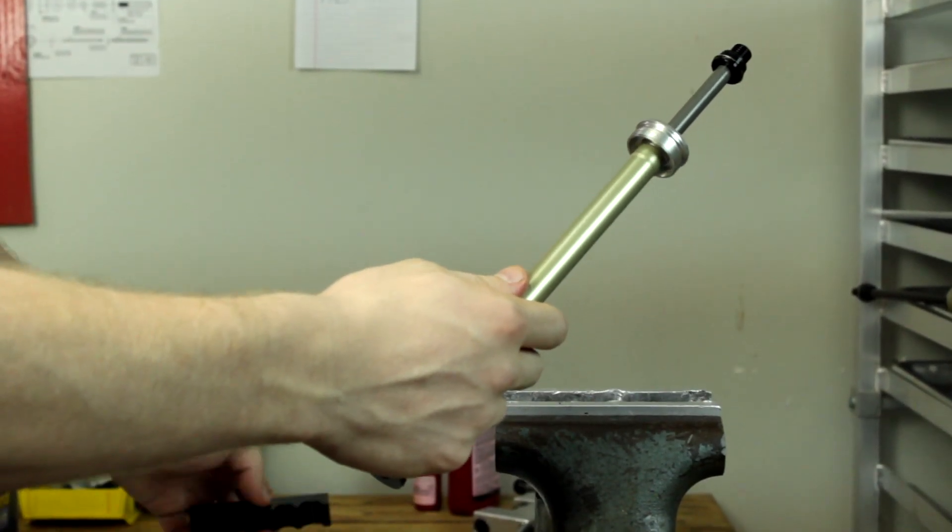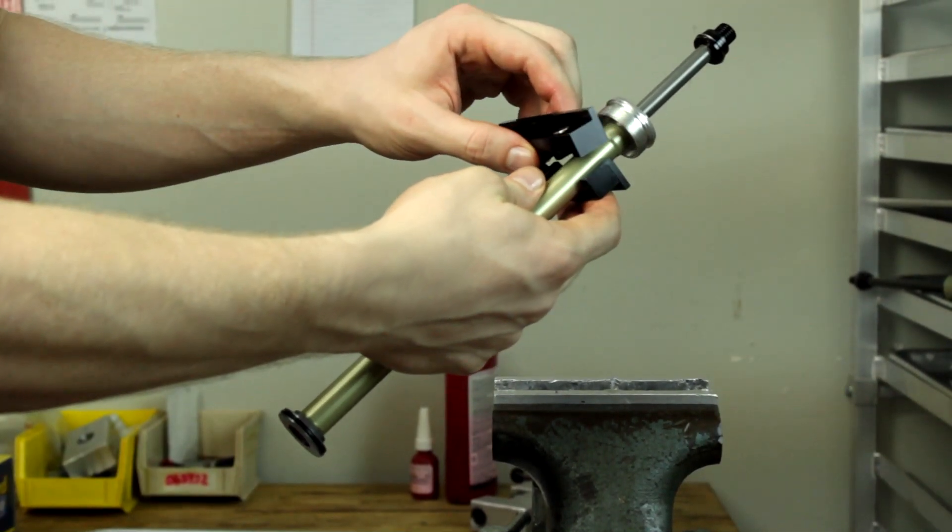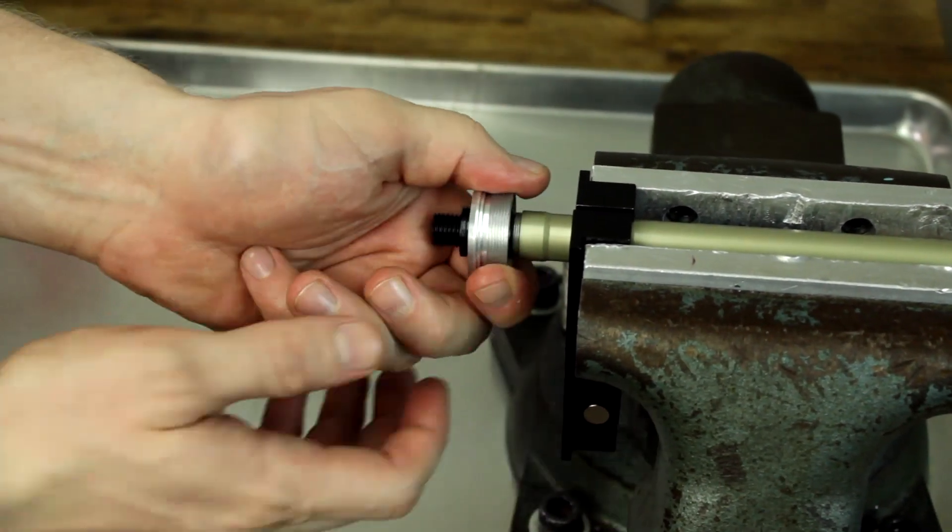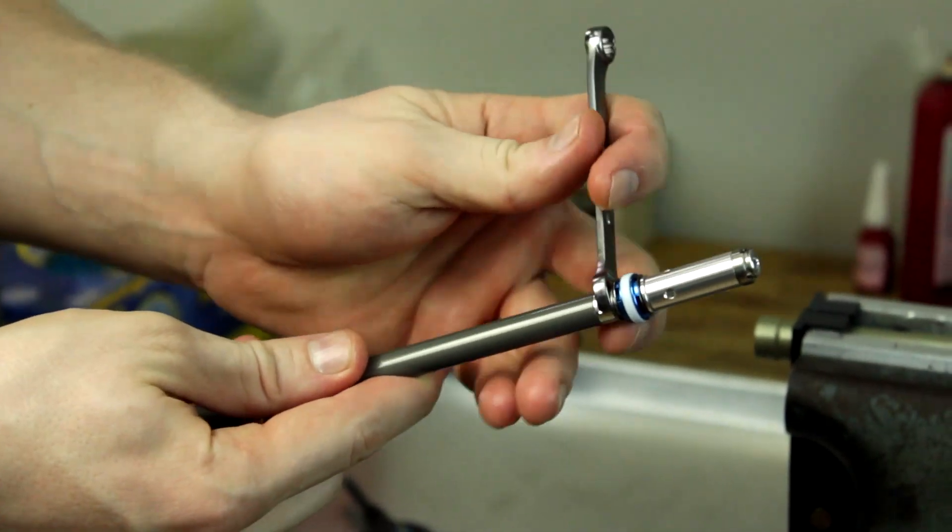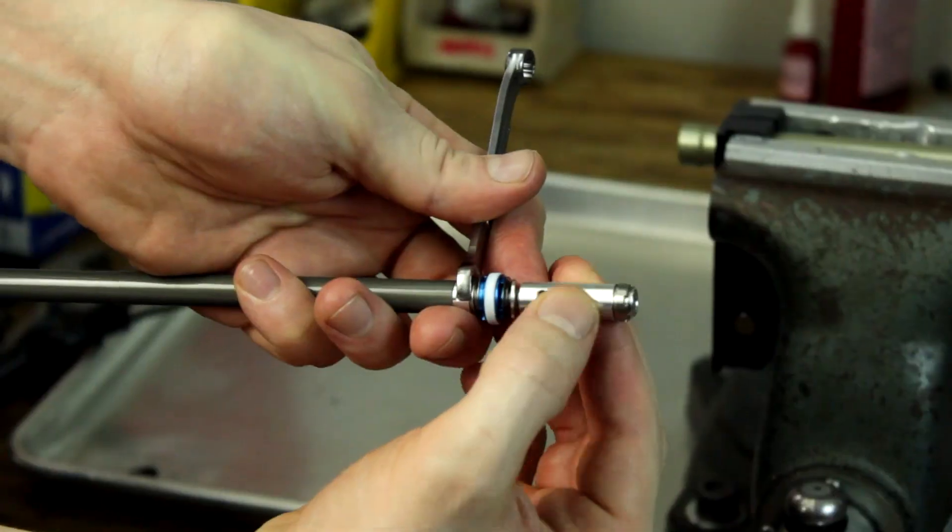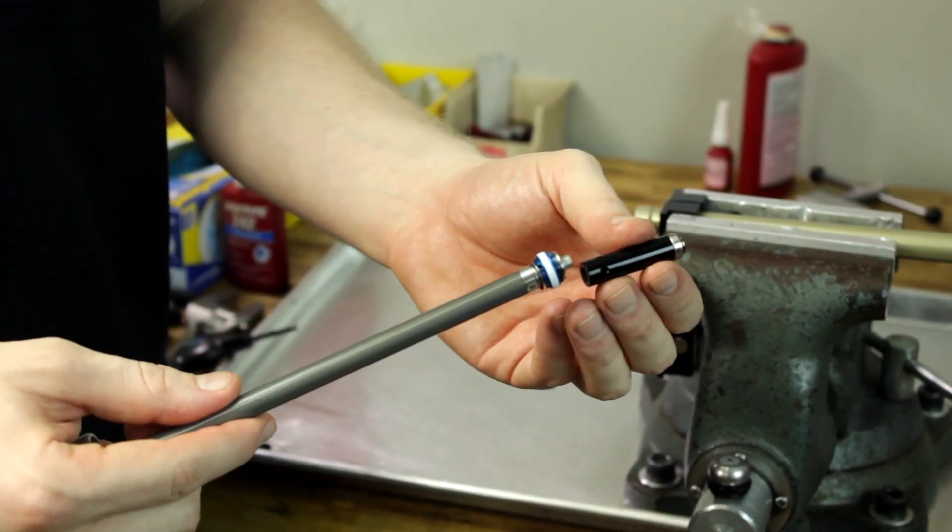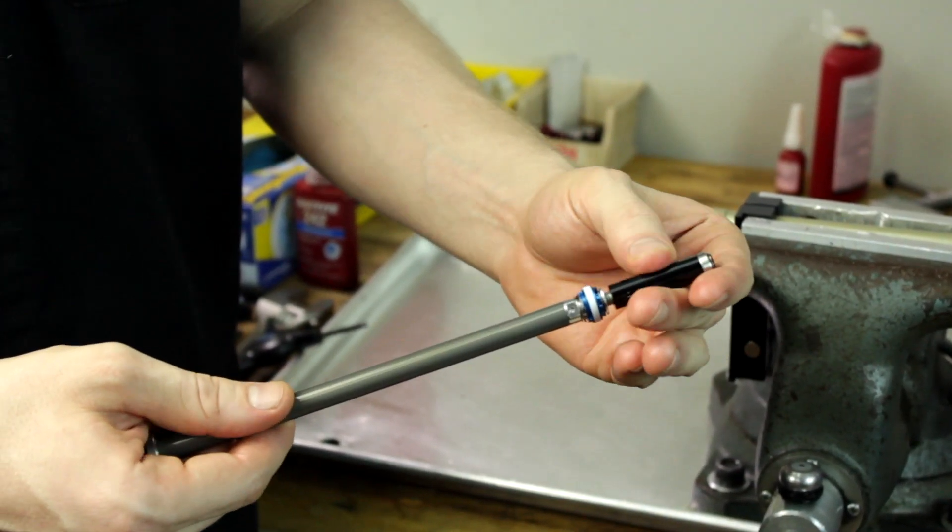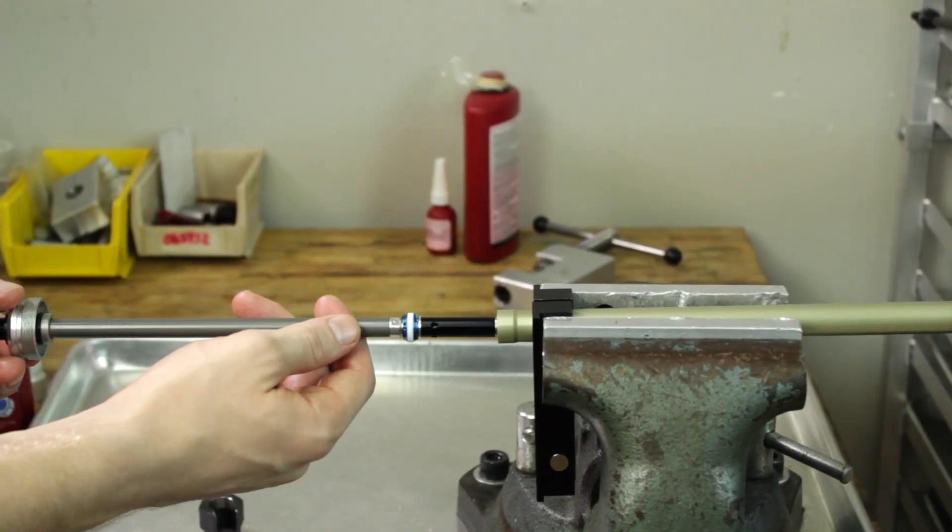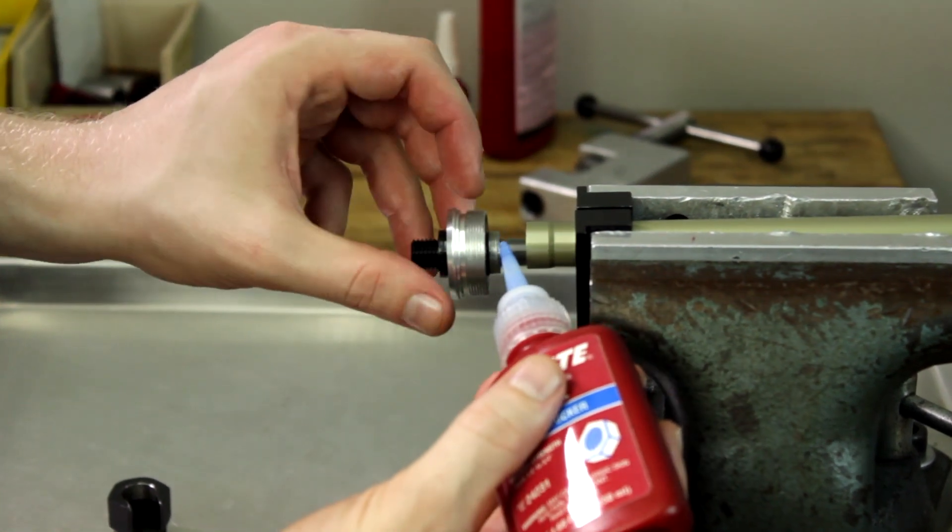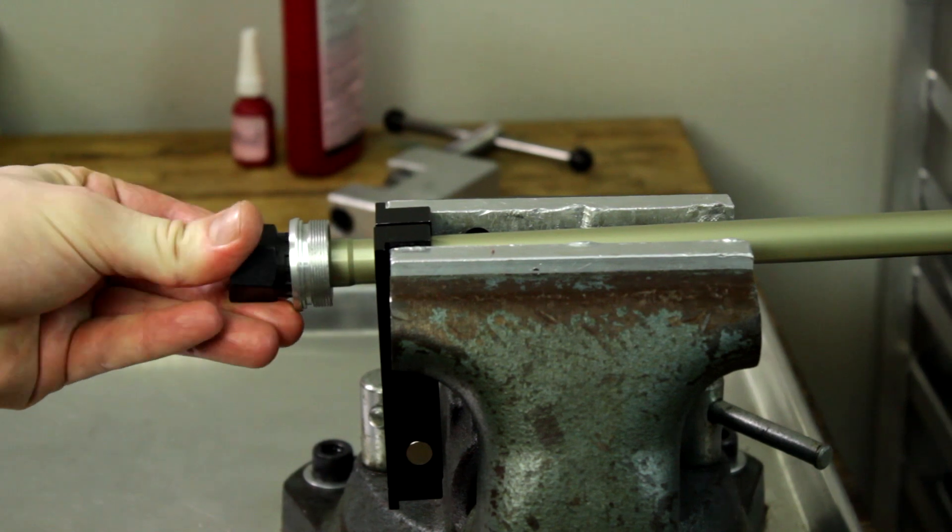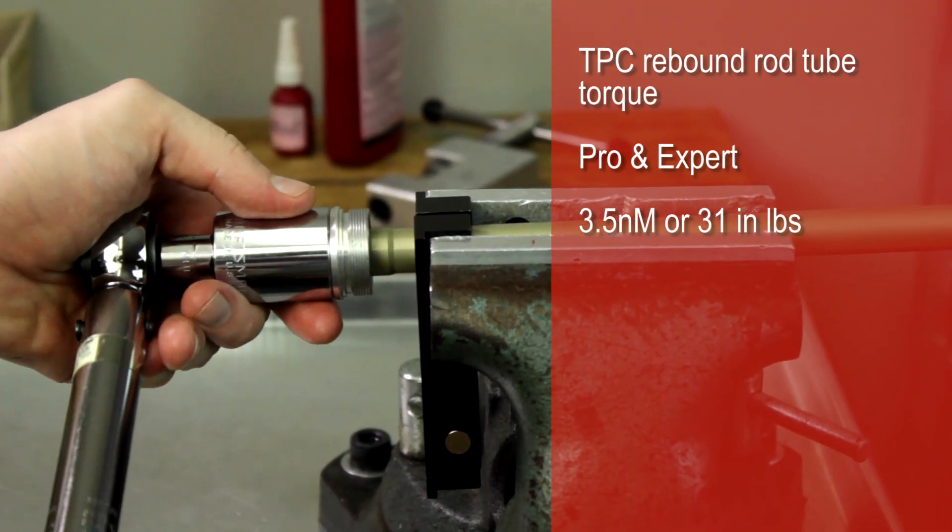Remove the cartridge tube from the rebound assembly using the matic fork clamp lock 16.3 millimeter and the matic cassette tool. Remove the 26 inch hydraulic bottom-out piston using an 8 millimeter box wrench and a 5 millimeter allen wrench. Apply a small amount of blue loctite to the 27.5 millimeter hydraulic bottom-out piston and attach the rebound rod at a max torque of 2 newton meters or 18 inch pounds. Apply a small amount of blue loctite to the rebound rod cartridge adapter. Install the cartridge tube to the TPC rebound rod with a matic clamp lock and a matic cassette tool at a max torque of 3.5 newton meters or 31 inch pounds.